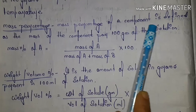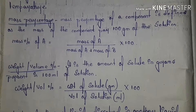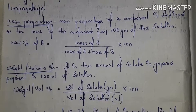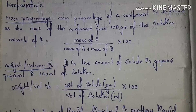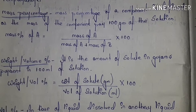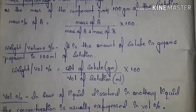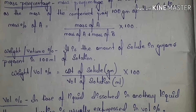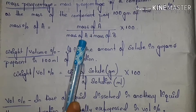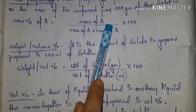Mass percentage: the mass percentage of a component is defined as the mass of the component per 100 grams of solution. So for a solution made of a mixture of two or three substances, how much mass of one component is present in 100 grams of that solution — that is called mass percentage. For example, for a solution with components A and B: mass percentage of A = (mass of A) / (mass of A + mass of B) × 100.